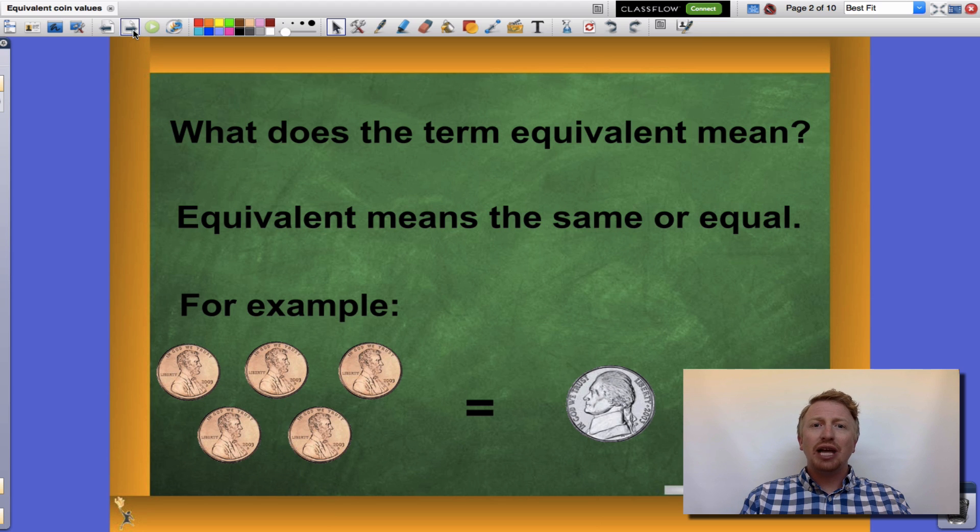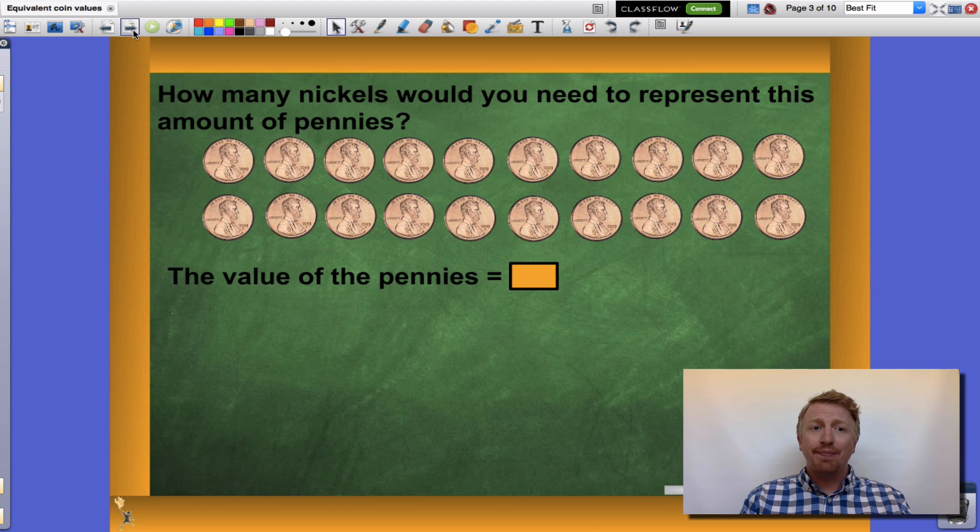Let's take a look at what our objective is today. How many nickels would it take to represent the amount of pennies that I currently have? Well, the first thing I need to determine is how many pennies do I have? One, two, three, four, five, six, seven, eight, nine, ten, eleven, twelve, thirteen, fourteen, fifteen, sixteen, seventeen, eighteen, nineteen, twenty.